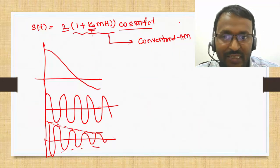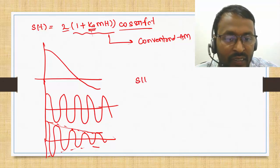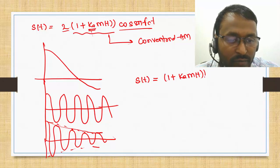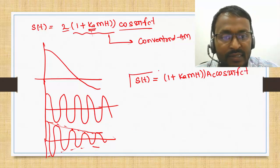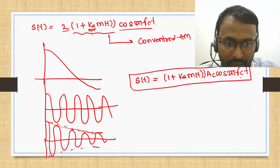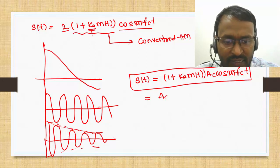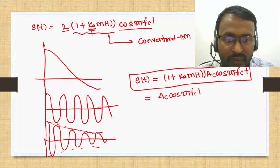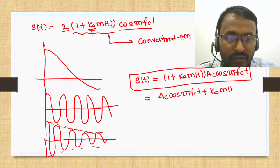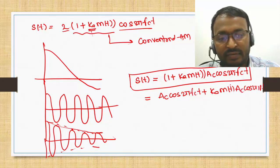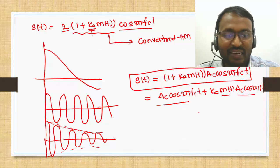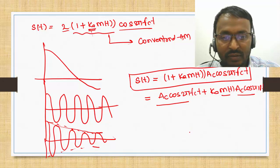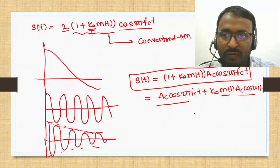For conventional AM, the standard equation is: s(t) = [1 + k_a · m(t)] · A_c cos(2π f_c t). If I rewrite this, it becomes A_c cos(2π f_c t) + k_a · m(t) · A_c cos(2π f_c t) — that is, the carrier signal plus the message signal multiplied by the carrier signal. This is the time domain equation of the AM signal.